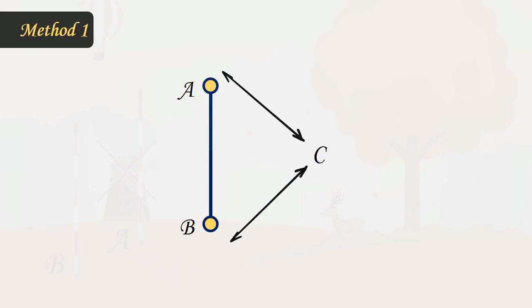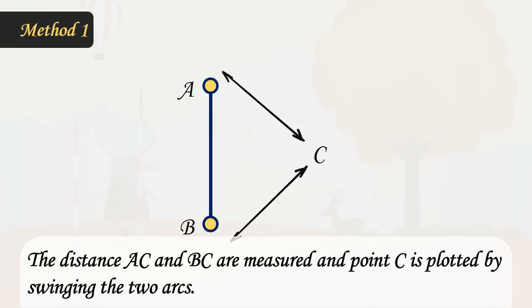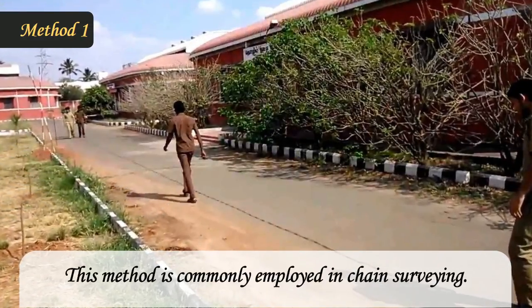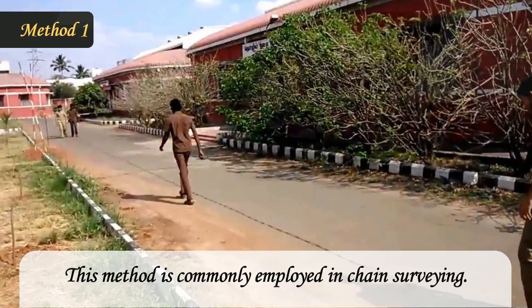Method 1: The distances AC and BC are measured and point C is plotted by swinging the two arcs. This method is commonly employed in chain surveying.